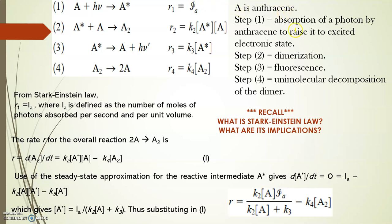There are four steps. The first step is the absorption of photon by anthracene to raise it to an excited state, that is A star. Step two is the dimerization—excited state anthracene and ground state anthracene combine to give a dimer A2. Step three is fluorescence, another photophysical process. And step four is the unimolecular decomposition of the dimer.